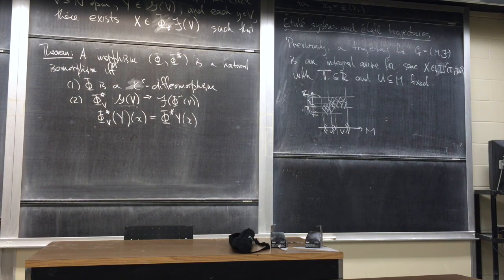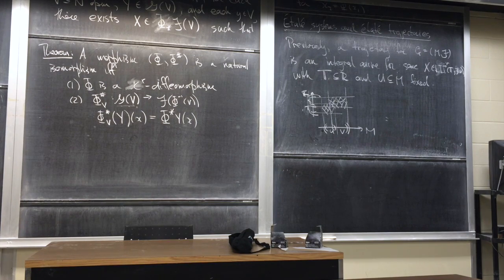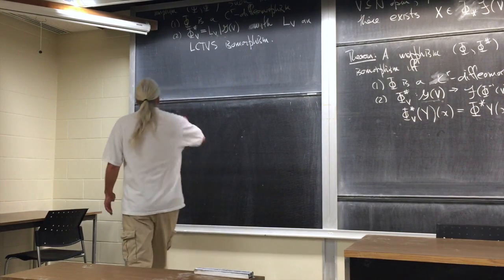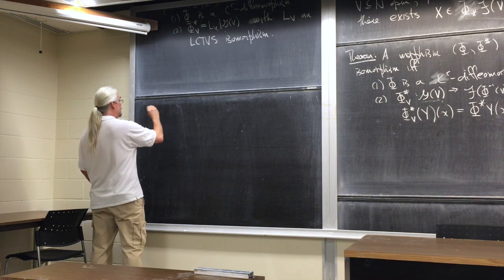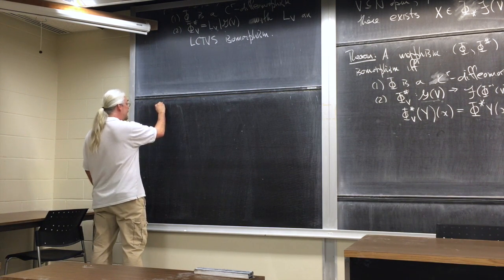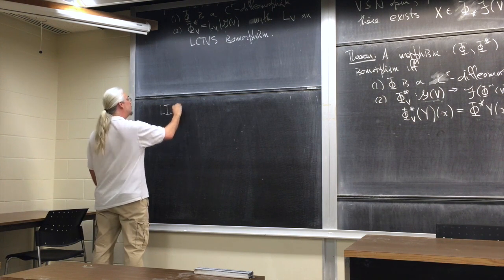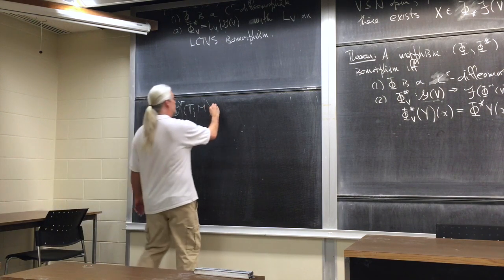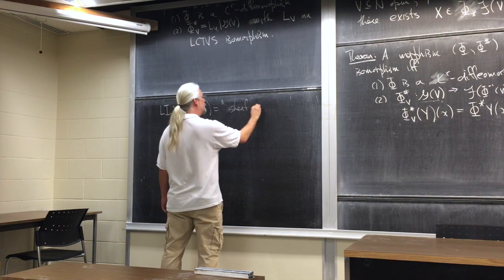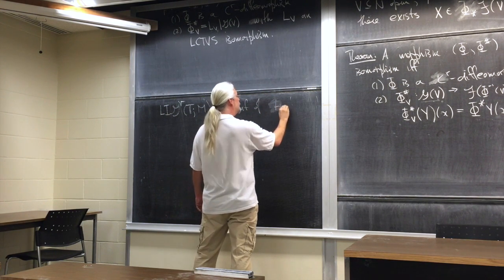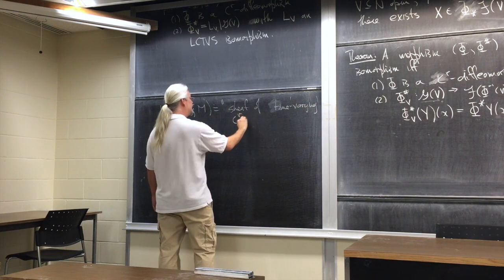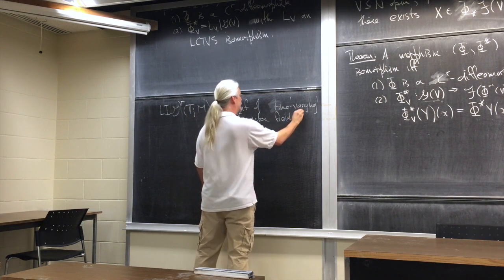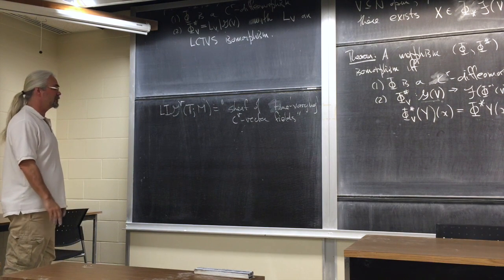Your notion of trajectory should be local — it should depend only on stalks. The key object is the sheaf of time-varying C-nu vector fields, which I'll write with some notation. Sections of this sheaf over an open subset W are in natural one-to-one correspondence with mappings from W into the étale space (the disjoint union of all stalks) of the sheaf of vector fields, equipped with the étale topology. The basis for the open sets in the étale space is given by taking a vector field on U and looking at its germ at every point.